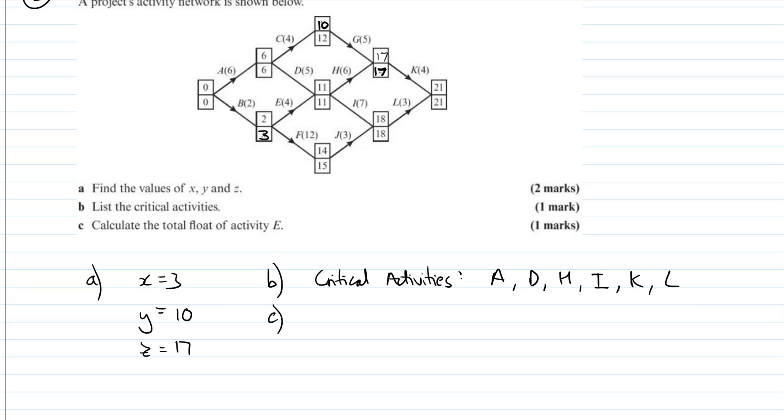And then calculate the float of E. So E is here. So we want to do the late finish minus the duration and start time. So the float of E, and you want to write down the calculation. I know it's an easy calculation, but write down 11 minus 4 minus 2, because that shows them how you're calculating, and that's your method you're working for this question. And that's all your stuff on floats.